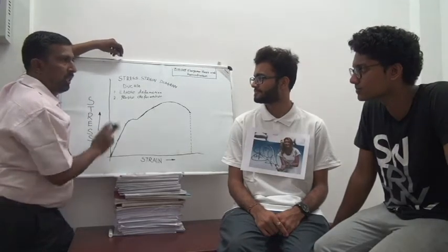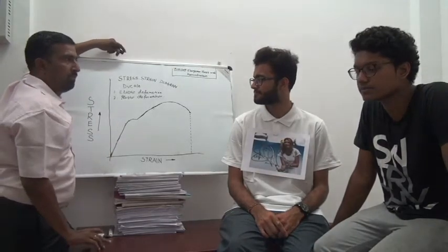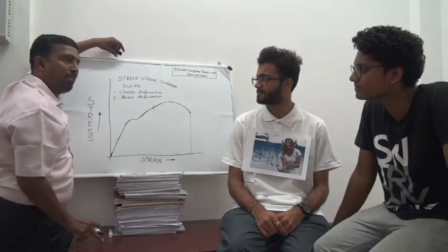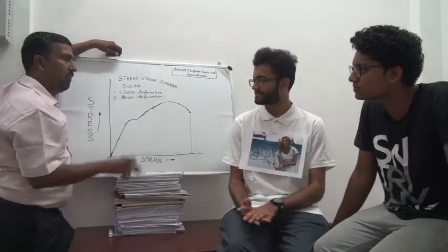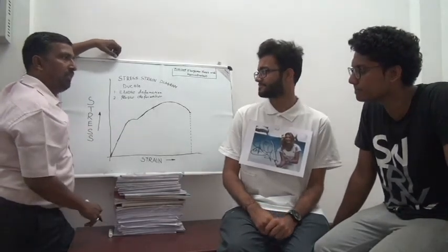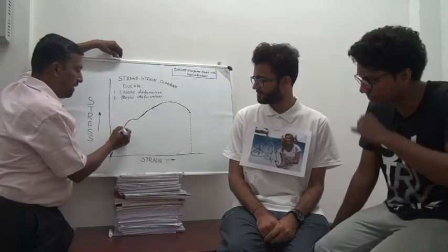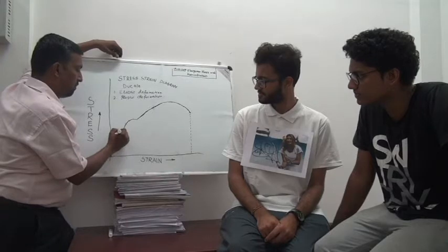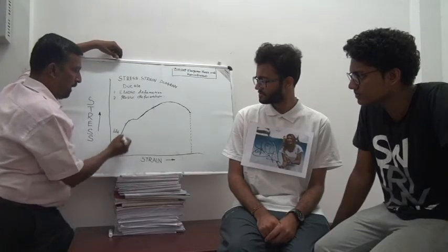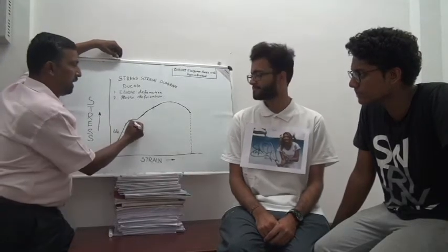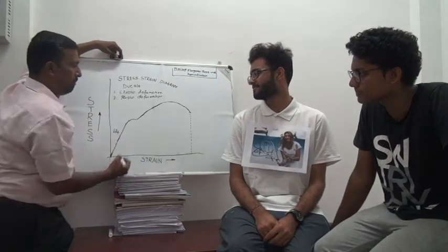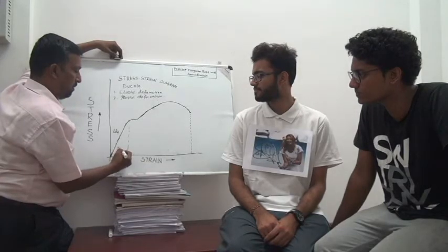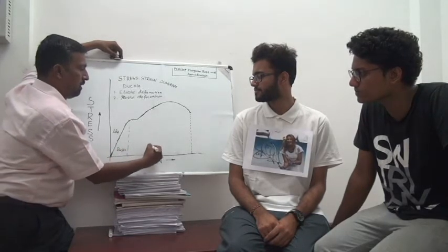There are two types of deformation: elastic deformation and plastic deformation. But in between elastic and plastic deformation, there is another type — anelastic deformation — which we will discuss in the next video. On the graph: from here to here is elastic deformation, and from here to here is plastic deformation.